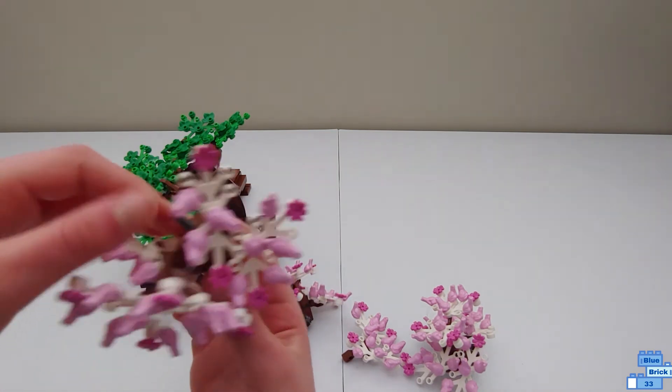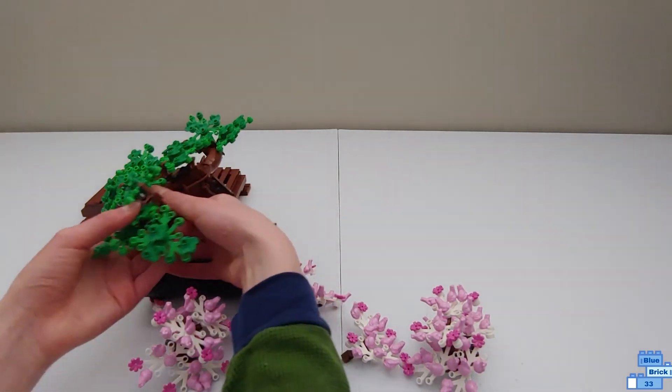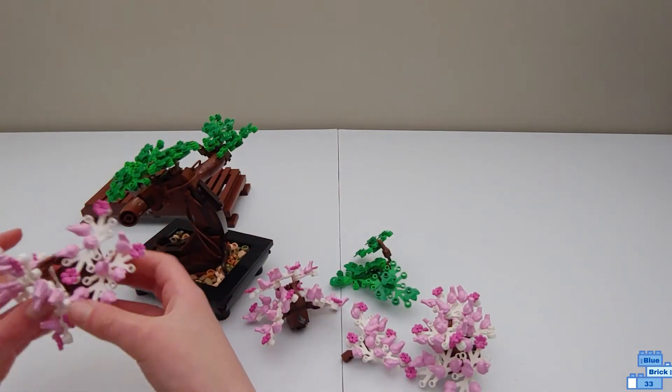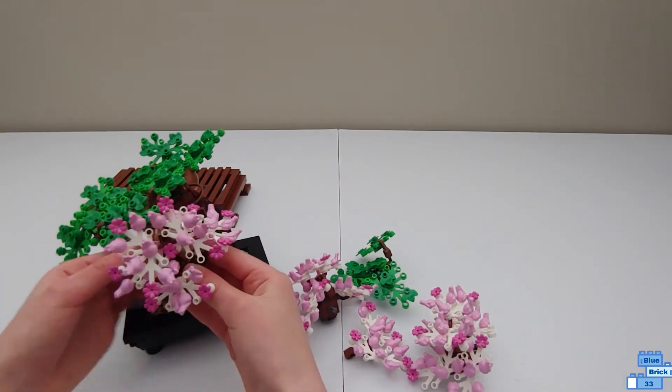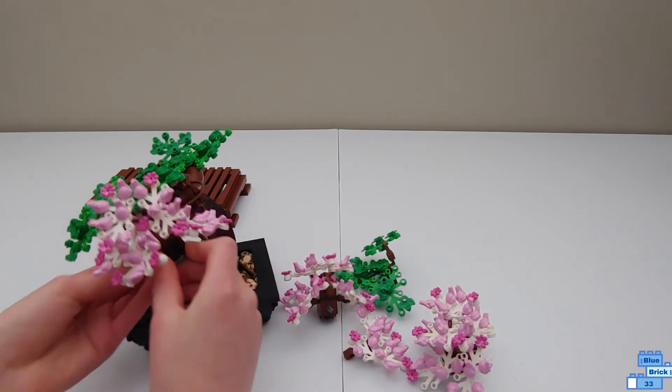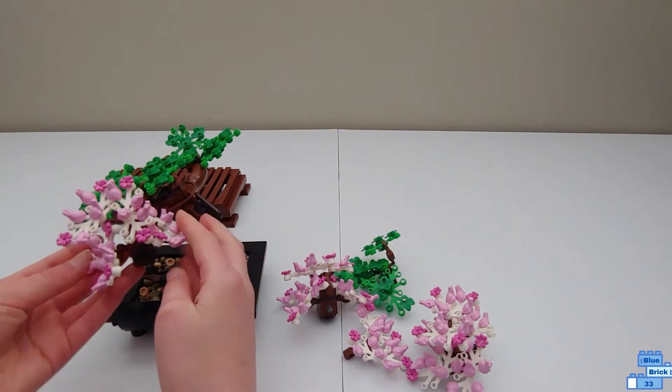So what you do is you find this technique right here and you take off this green one. Just replace it right here. Sometimes you have to take off the branch piece but usually not.